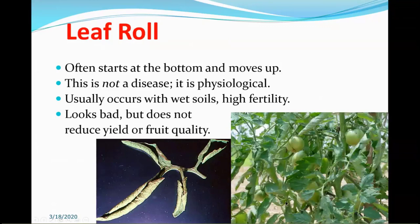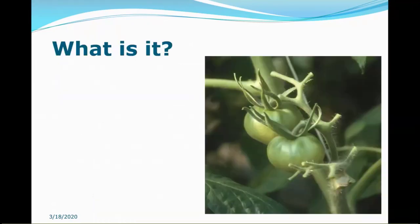Leaf roll is when the leaves — especially the bottom leaves — roll up, sometimes forming little tubes. It typically starts at the bottom and moves up the plant. It's not a disease; it's physiological and very common with moist soils and high fertility, especially when temperatures are up. It looks bad but doesn't affect yield or fruit quality, so this is one you don't have to worry about.